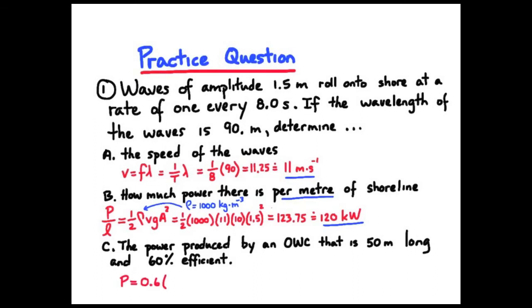And our last question, an OWC, 50 meters long, 60% efficient, we put in our values here and we get an output of about 3.6 million watts, 3.6 megawatts.